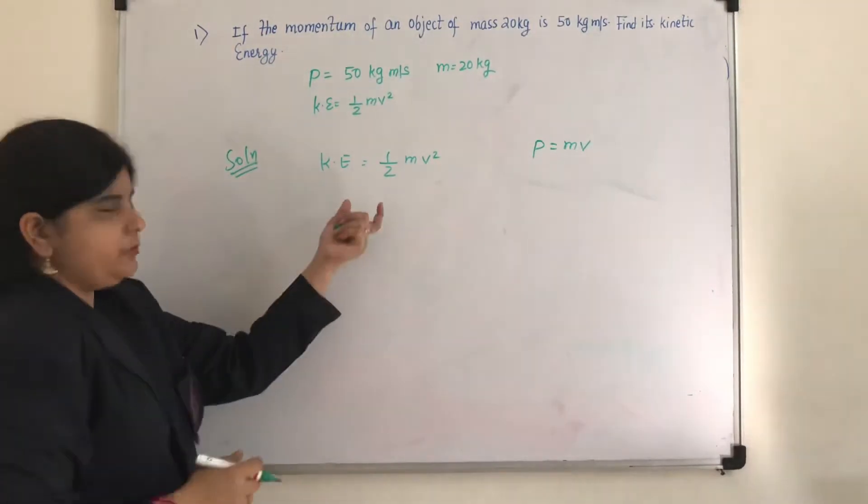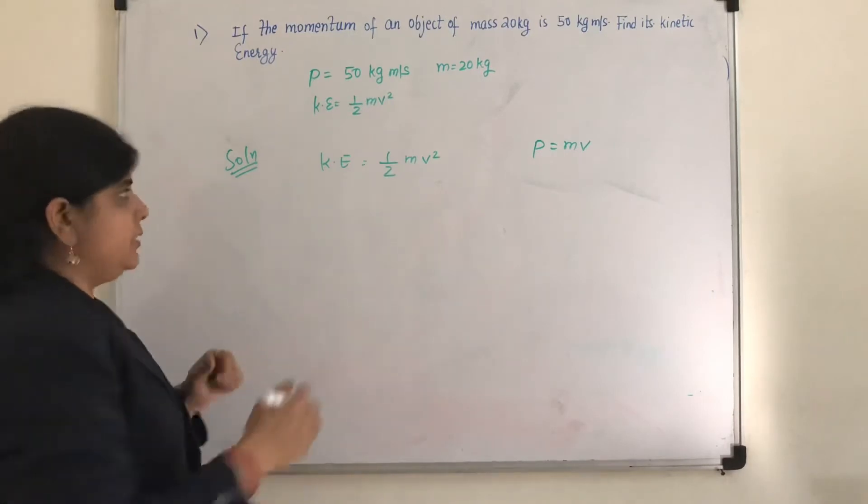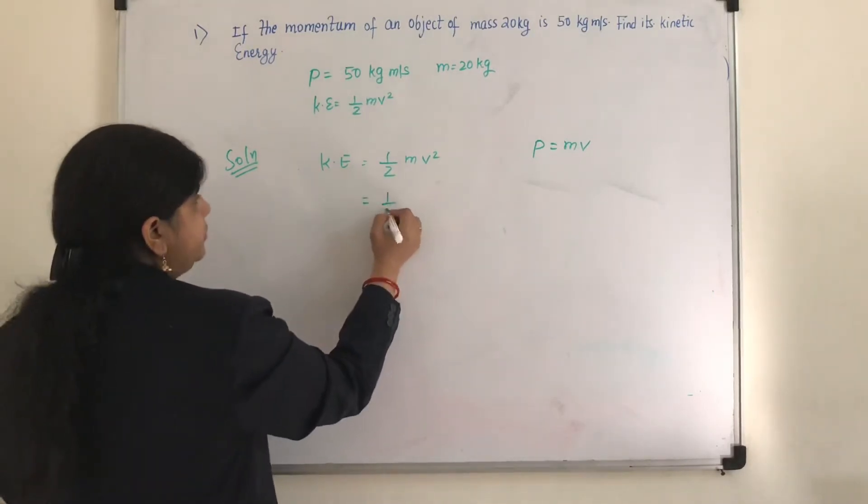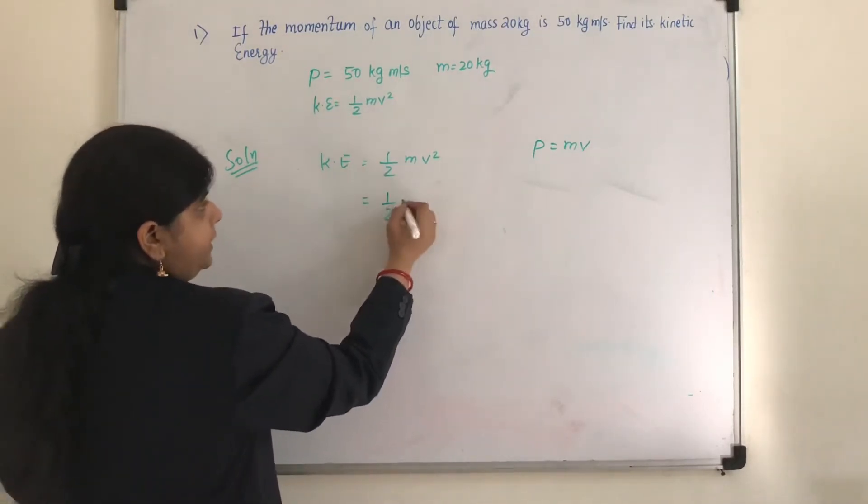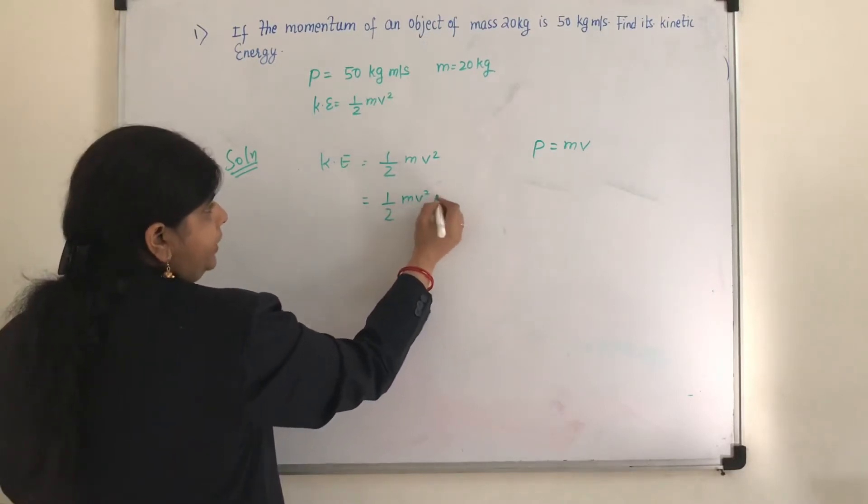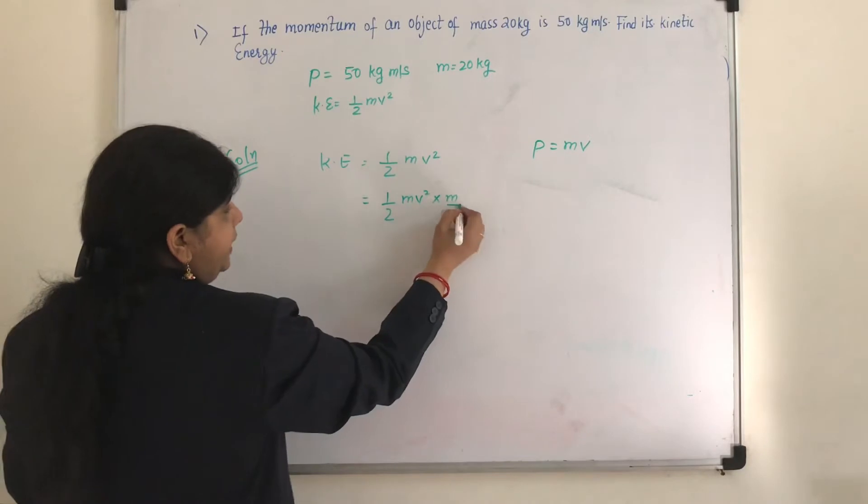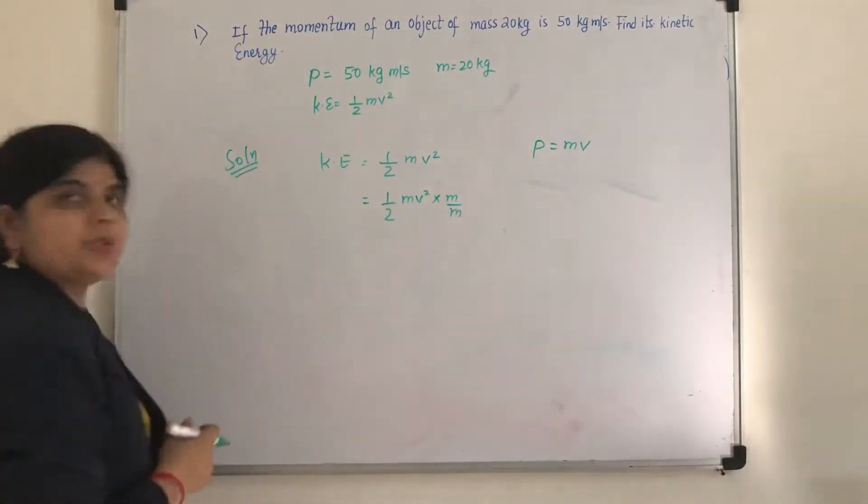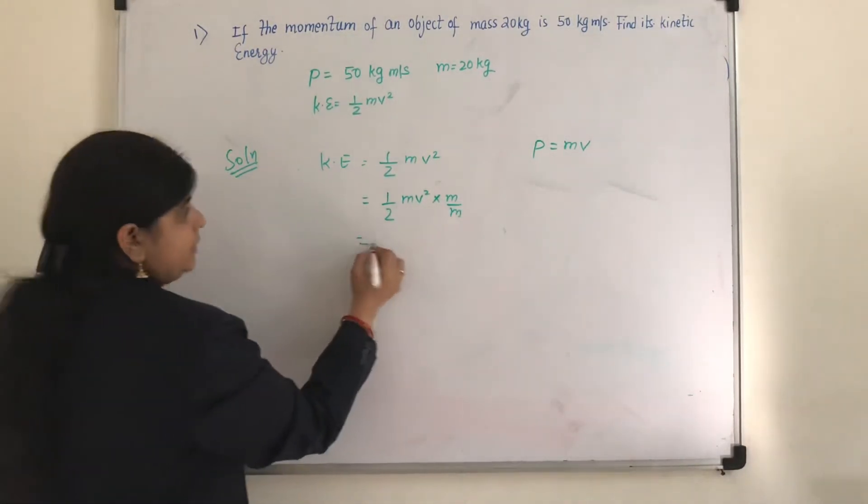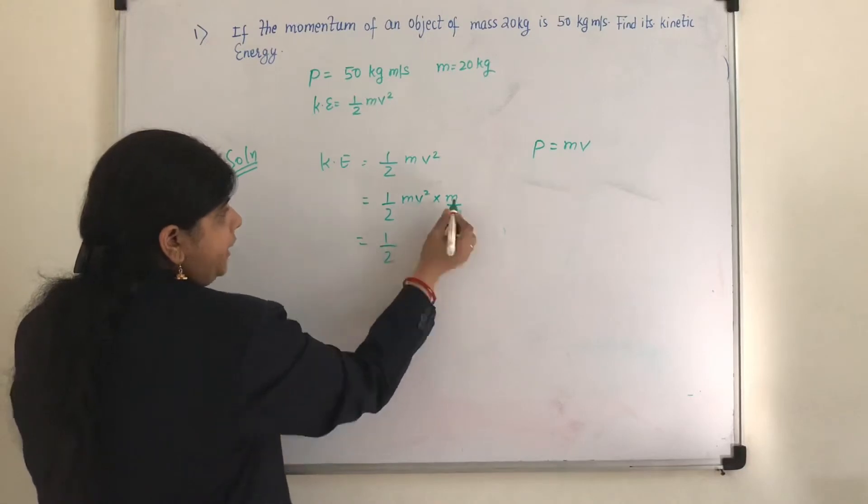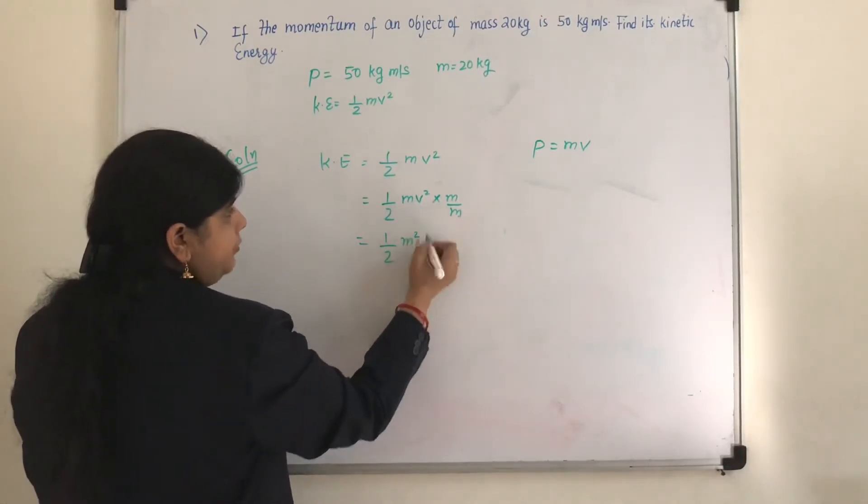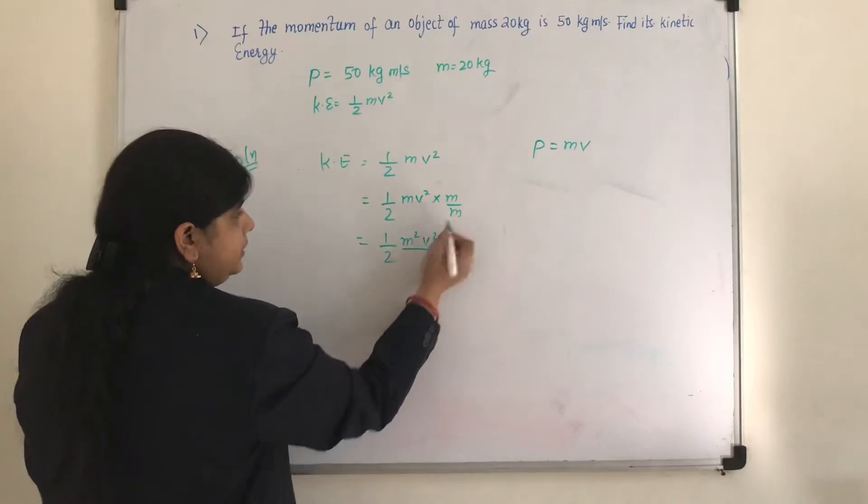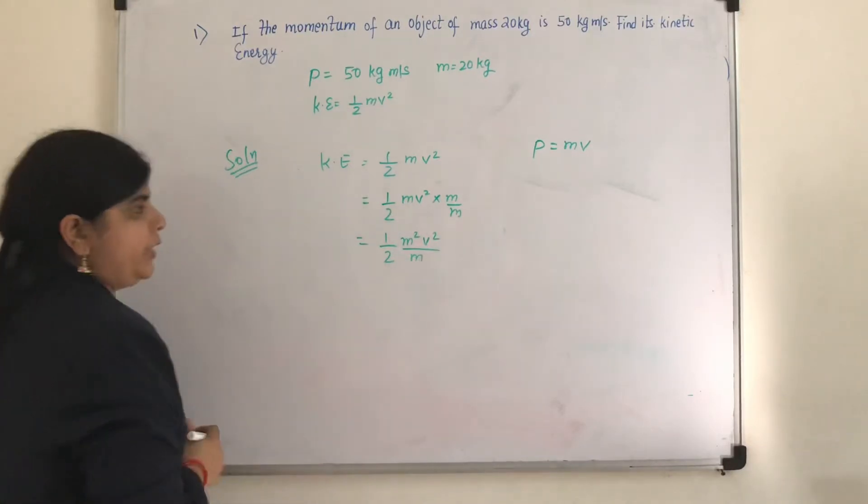Now see here I am going to do some changes. What I am going to do? I am going to multiply and divide by one extra m. Means I am making it m by m. So this will become half m into m will become m square v square and in the denominator also you have m.